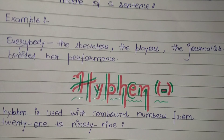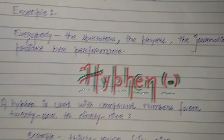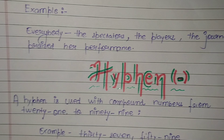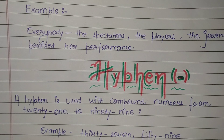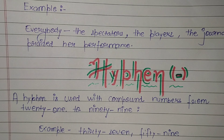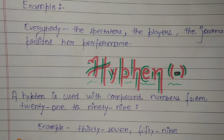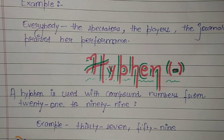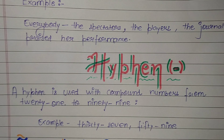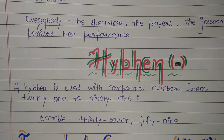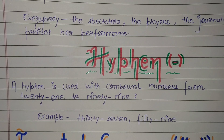Next is the hyphen. A hyphen is used with compound numbers from 21 to 99. Examples: thirty-seven, fifty-seven.